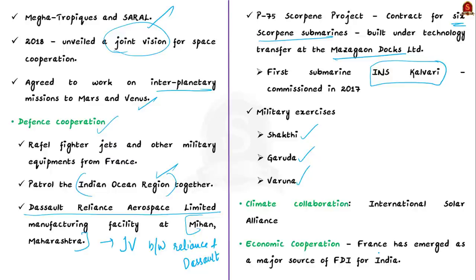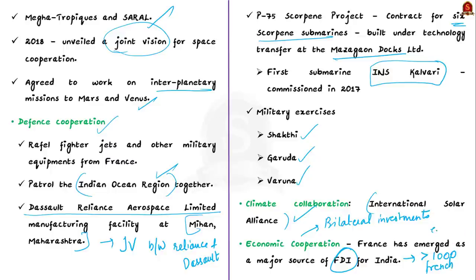Beyond these strategic areas, India and France joined hands after the Paris Climate Agreement to launch the International Solar Alliance. Finally, on economic cooperation, both countries have important bilateral investments, trade, and commercial cooperation. France has emerged as a major source of foreign direct investment for India, with more than 1,000 French establishments already present in India. India and France share close cooperation in many strategic areas.